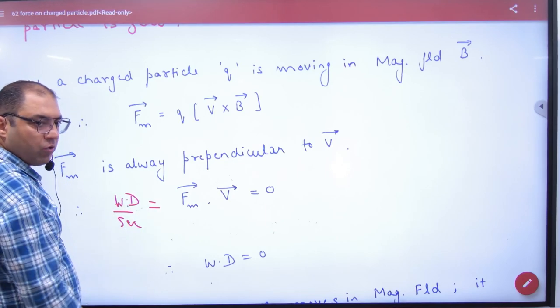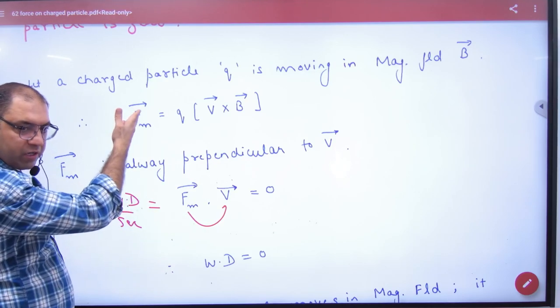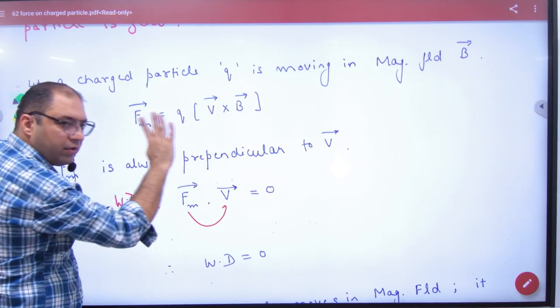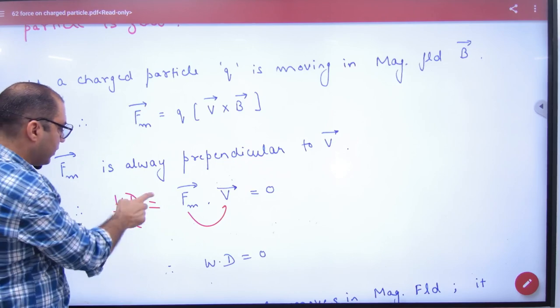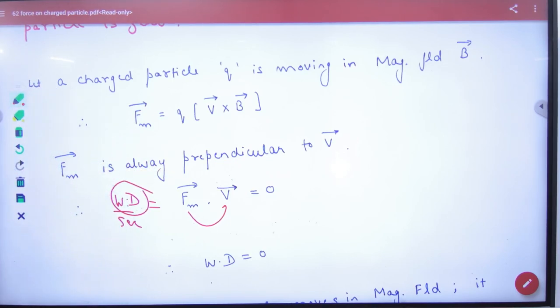Because F vector and V vector are also at 90 degrees due to the cross product, the dot product will be zero. So the value of work done automatically comes out to be zero.